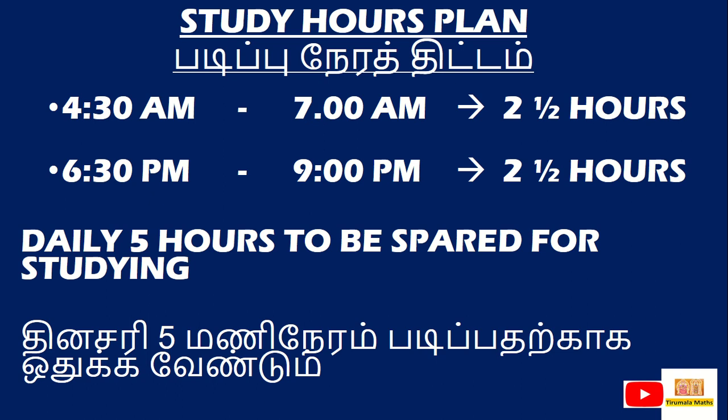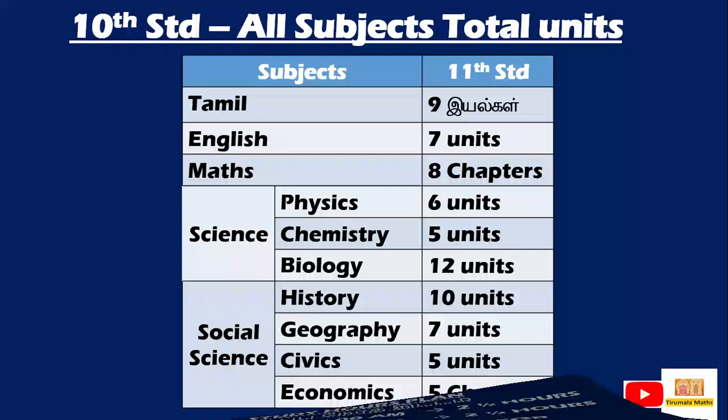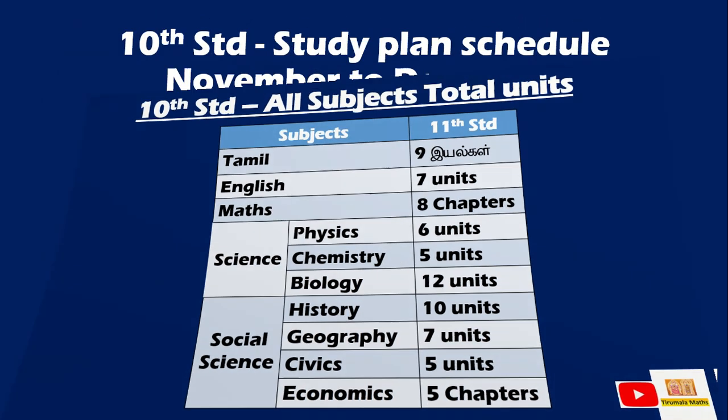The second slide shows the 10th standard all-subjects total units. In Tamil there are 9 units, in English there are 7 units, Maths there are 8 chapters, Physics there are 6 units, Chemistry 5 units, and Biology 12 units. Social Science includes History with 10 units, Geography 7 units, Civics 5 units, and Economics 6 units.